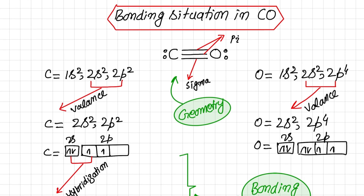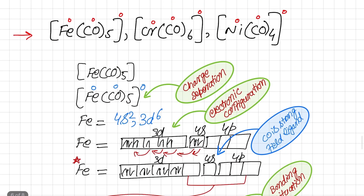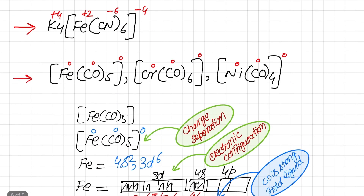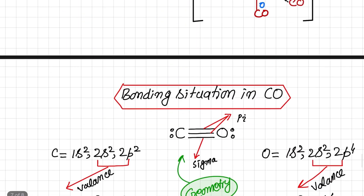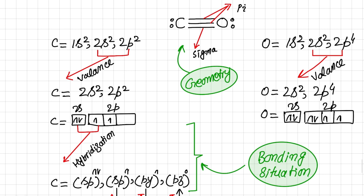To recap: in normal coordination complexes, the central metal atom mostly has a positive charge whereas the ligand has a negative charge, so both attract each other causing stability. But in metal carbonyls, the metal has no positive charge and the carbonyl ligand has no negative charge — all are neutral species — yet these complexes are stable. To elaborate this effect we must understand the bonding situation within the carbonyl or carbon monoxide ligand itself.